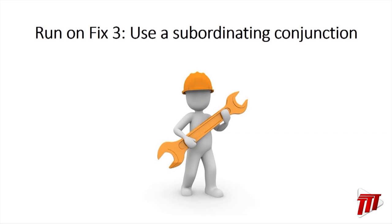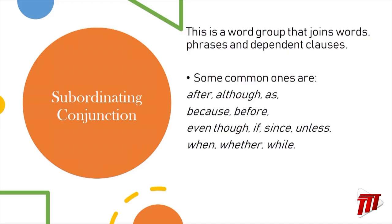Now we have our third way of fixing a run-on sentence: using a subordinating conjunction. What is a subordinating conjunction? They are simply conjunctions that join words, phrases, and dependent clauses. Here are some examples of subordinating conjunctions. We've talked about what a subordinating conjunction is and how it operates in a subordinate clause — and what is a subordinating clause? Think of it as a dependent clause: a clause that needs something else to make sense in a sentence.